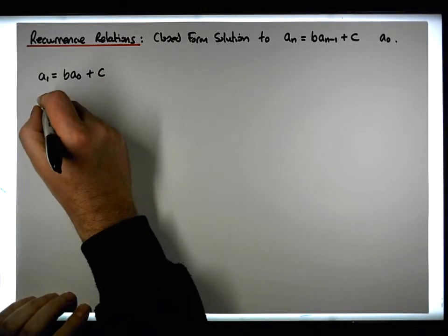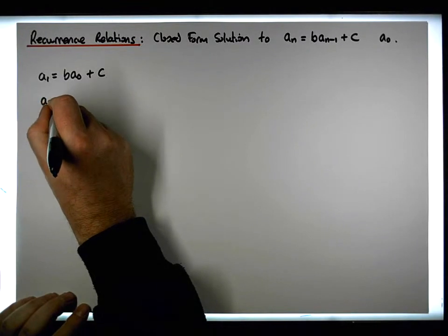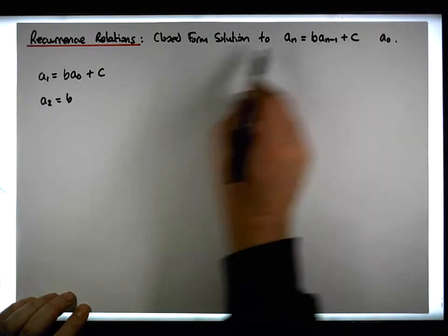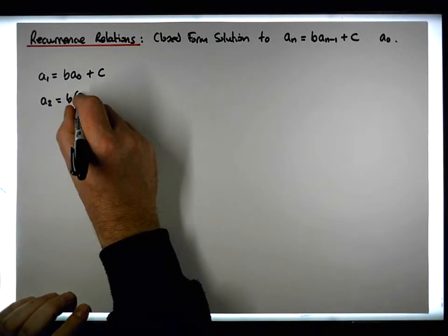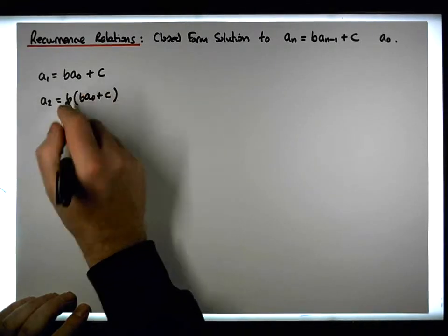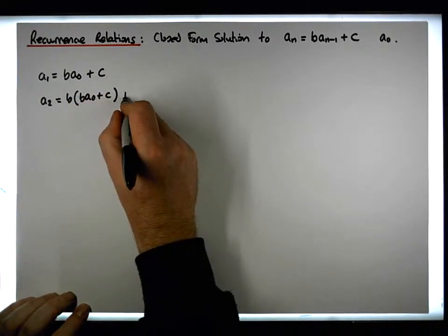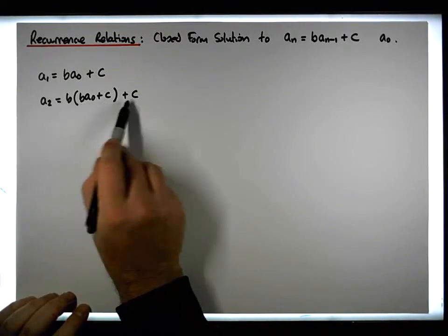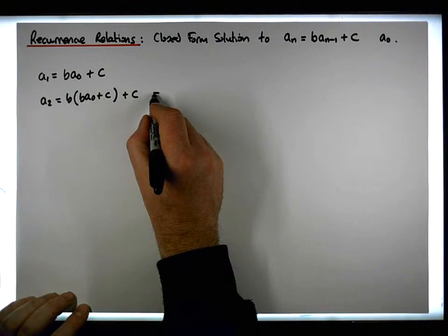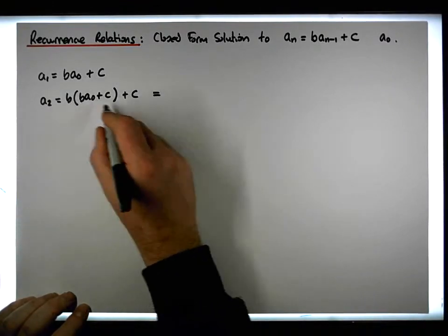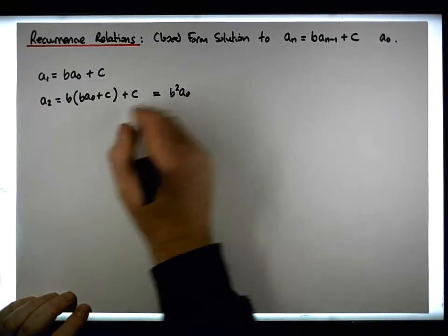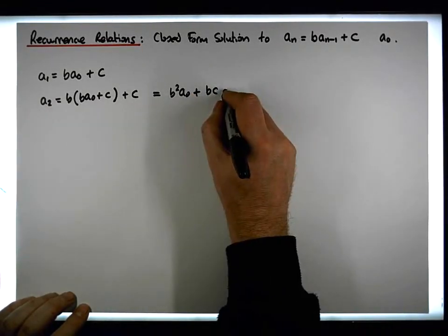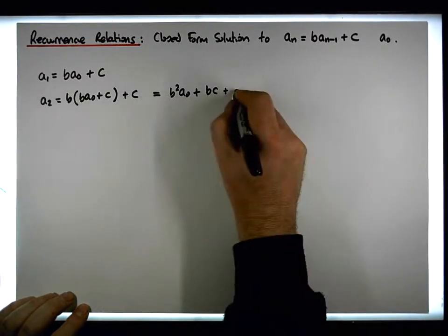For the second term, a₂ equals b times a₁, and we've just figured out that a₁ equals b·a₀ plus c, so substituting in and multiplying out the brackets: a₂ equals b²·a₀ plus bc plus c.